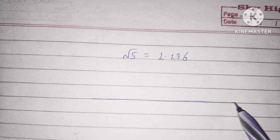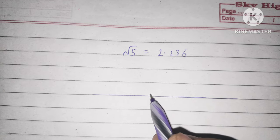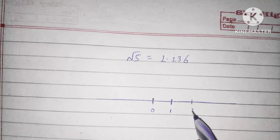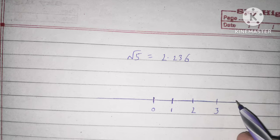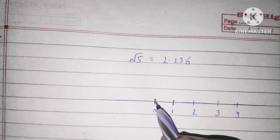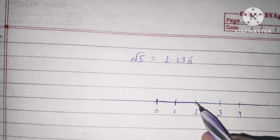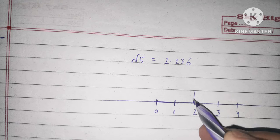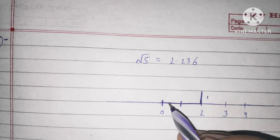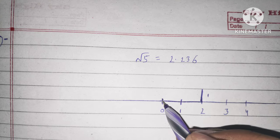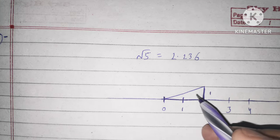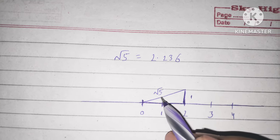Draw a line and mark the points. Then draw a perpendicular line using a scale. From point 0, this forms a right triangle. We use the Pythagorean theorem to get root 5. The base is 2 and the perpendicular length is 1.